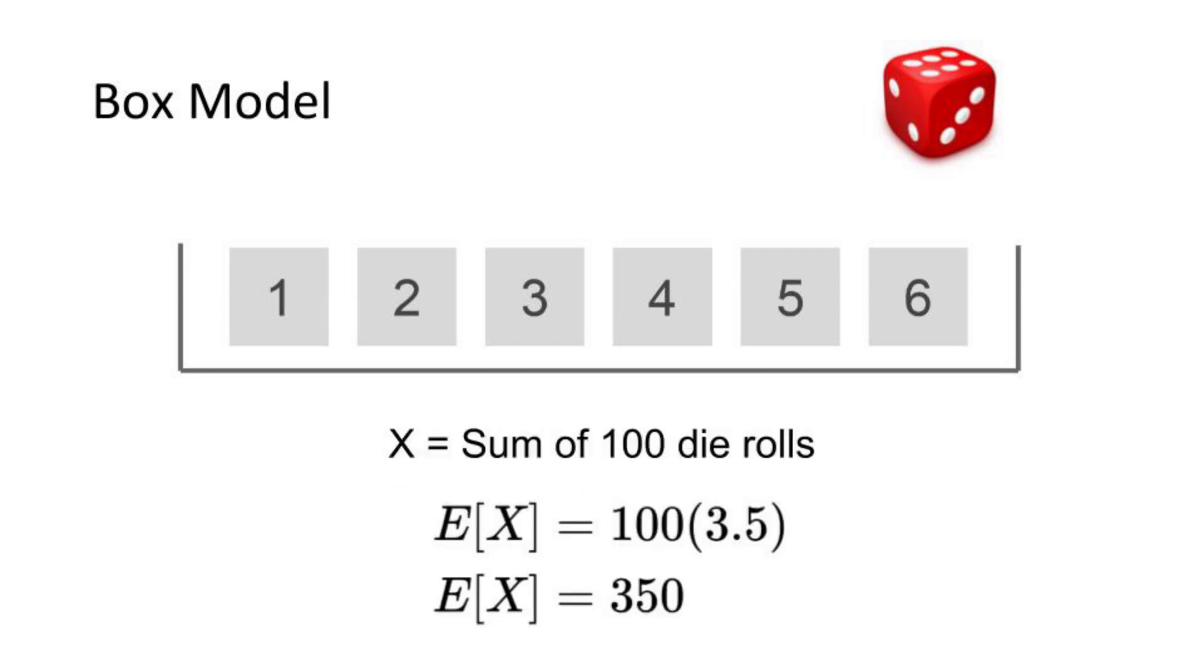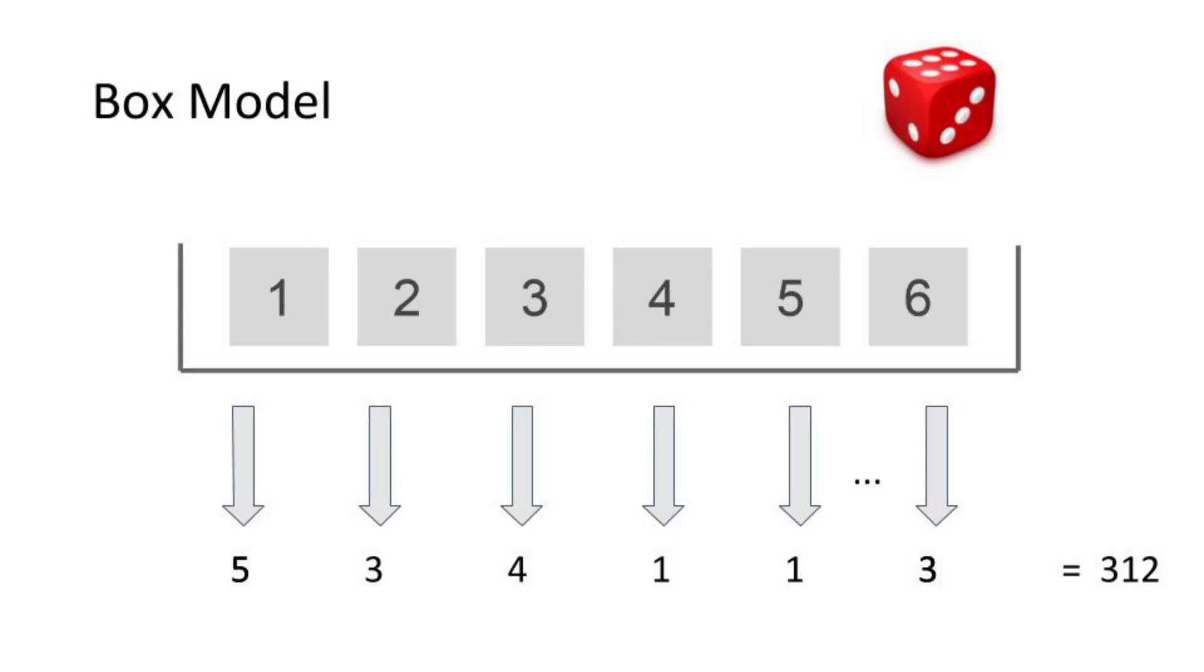But remember, the expected value of 100 rolls of a die is 350 on average, but you're not always going to get this number. If I did a random test right now drawing 100 times from this box and then adding them all up, I'll probably get a different number. Let's say 312.